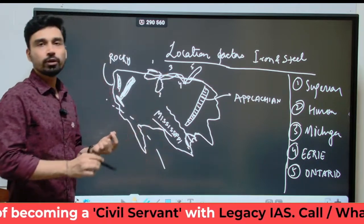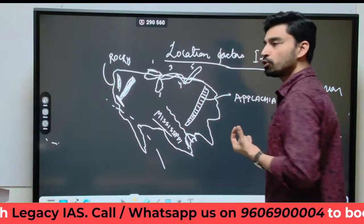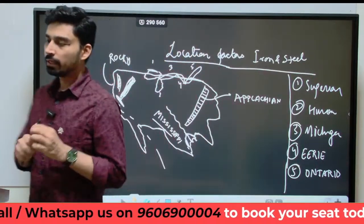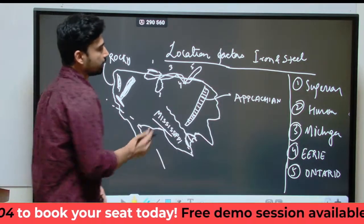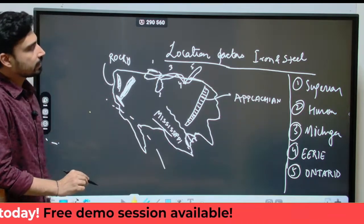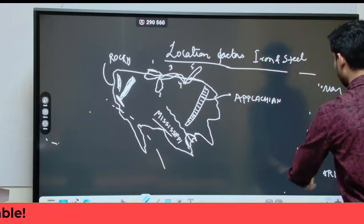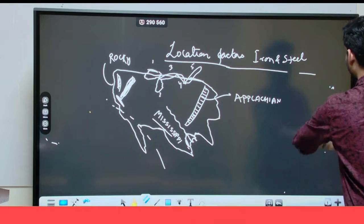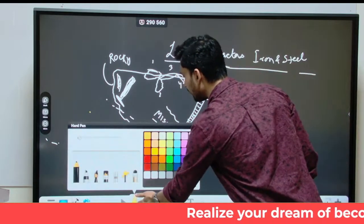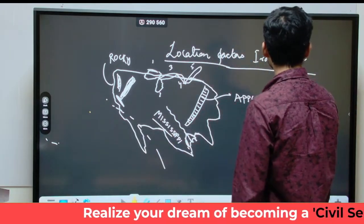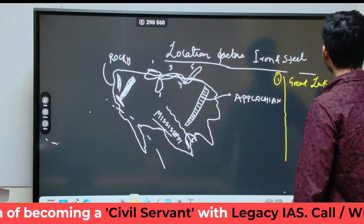This is the overall geography of the United States of America. Now let us understand where iron and steel industries are situated and why. The first region of iron and steel industry is situated in the Great Lakes region. The iron and steel industry uses bulky and heavy raw material, so let us see what is available in the Great Lakes region.